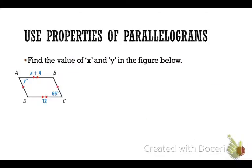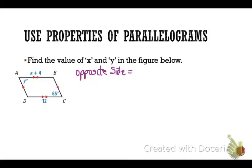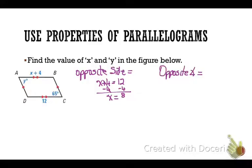Let's use some of the properties of a parallelogram. Given a figure, find the value of x and y. Looking at this, I can see that AB is parallel to DC and AD is parallel to BC because of the markings. Therefore I know this is a parallelogram because opposite sides are parallel. Since it is a parallelogram, opposite sides are congruent, so x + 4 = 12, which gives x = 8. Also, opposite angles are congruent, so angle A equals angle C, meaning y = 65 degrees.